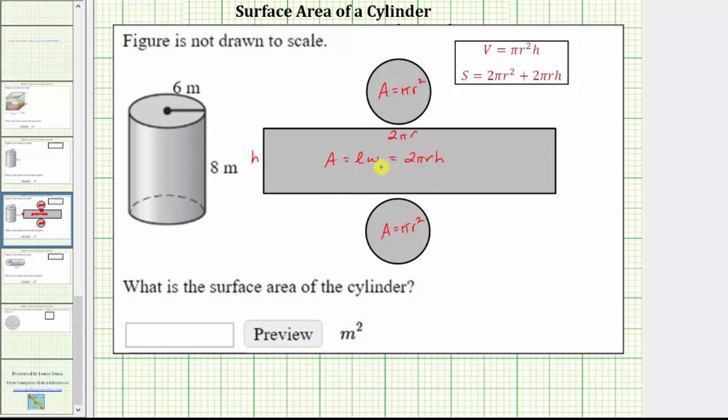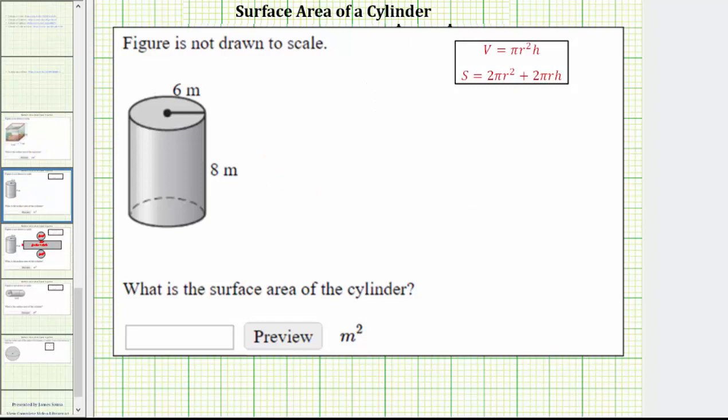And now let's find the surface area of the given cylinder. Notice how the radius is equal to 6 meters, and the height is equal to 8 meters, which means the surface area of the cylinder is equal to 2 times π times r squared is 6 meters squared plus 2 times π times r, which again is 6 meters, times the height, which is 8 meters.